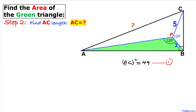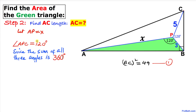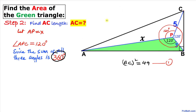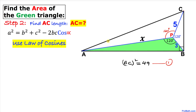In the next step we are going to find the length AC. Since we don't know the length of line segment AP, let me call AP equal to X. Moreover, the measurement of angle APC is going to be 120 degrees as well, since the sum of all these angles is 360 degrees. We will use the law of cosines once again. I'm going to call this angle alpha, the opposite side A which is AC.